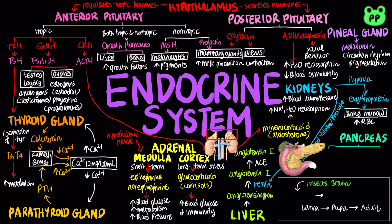The pancreas secretes two antagonistic hormones to regulate blood glucose level. The alpha cells produce glucagon, which increases blood glucose level, while the beta cells produce insulin, which decreases blood glucose level.